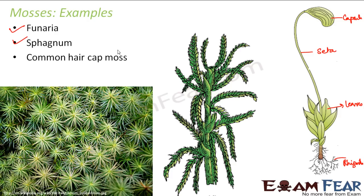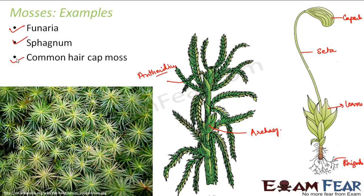If you look at the structure of Sphagnum — Sphagnum is used as a very good packing material; dried Sphagnum is a very useful packing material. Here you can see a branch-like structure in the middle. The thick structure is the archegonial branch, and the branches which come out are the antheridium branch. The antheridium branch is the male gametophyte, and the archegonial branch is the female gametophyte. The third example is common hair cap moss.